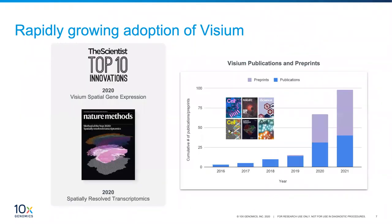Even a few years ago when 10x acquired the spatial transcriptomics company—now the Visium product—researchers identified spatially resolved transcriptomics as the next major research need. In 2020, Nature Methods picked spatially resolved transcriptomics as their method of the year. In just the year and a half since commercial availability, adoption has been rapid, with many preprints and peer-reviewed publications utilizing this technology.